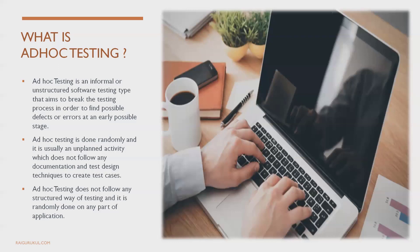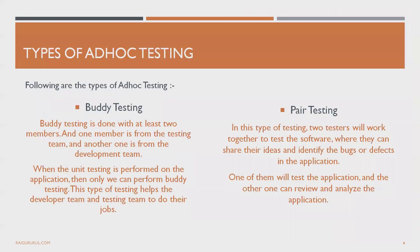This type of testing is generally performed by a combination of testers and developers — those who are building the product have a good idea of where things might go wrong. Results of this type of testing are produced in early phases, and it is performed by internal team members. There are two types of ad hoc testing: buddy testing and pair testing.